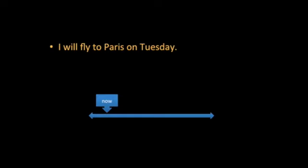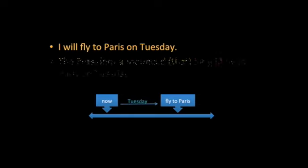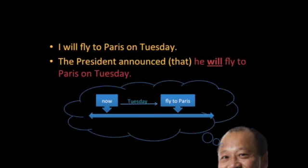Here's another case of a future reference. When this information is being reported, you have a choice of keeping the original verb of will or changing it to the past reported tense of would.